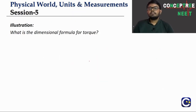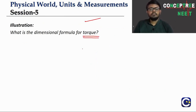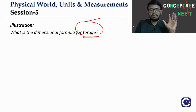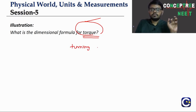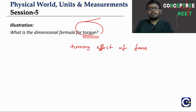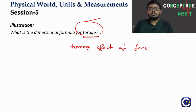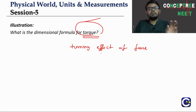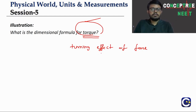What is the dimensional formula for the torque? Torque in rotational motion creates a turning or rotating effect. It is also called the turning effect of force. We will need just one formula or equation to calculate the dimensional formula of torque.